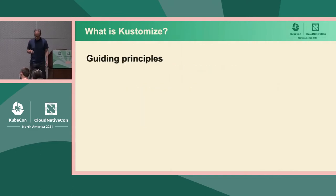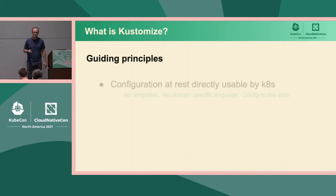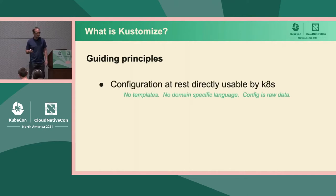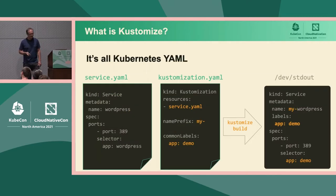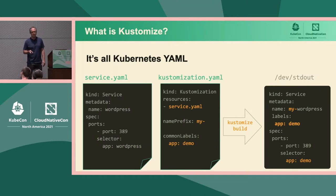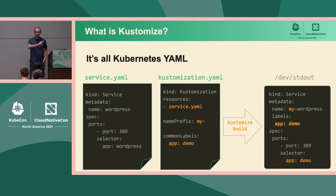What are the guiding principles when thinking about Kustomize and writing extensions? First, configuration at rest is just data. It should be directly usable by Kubernetes. So we eschew templating and domain-specific languages. We just want to see Kubernetes YAML. Second, edits or generating YAML should themselves be described using Kubernetes YAML. So no matter where you look, you see Kubernetes YAML.